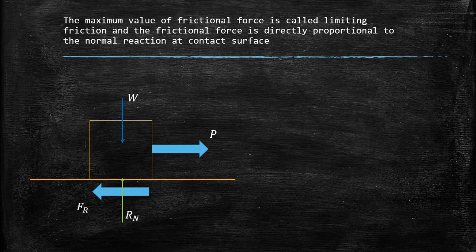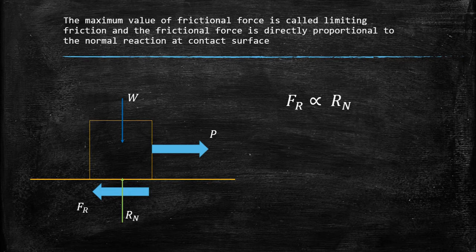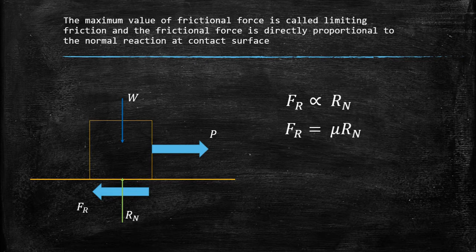The frictional force Fr is directly proportional to Rn, the normal reaction. Introducing a proportionality constant, Fr equals mu times Rn. The constant mu is called the coefficient of roughness, or the roughness coefficient.